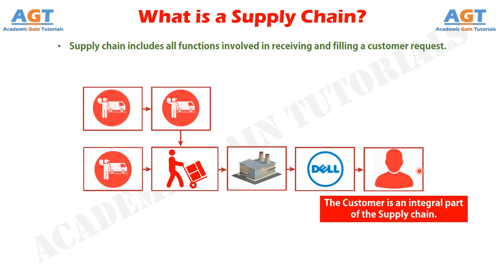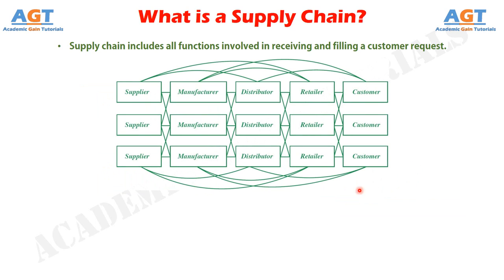The term supply chain conjures up images of product or supply moving from suppliers to manufacturers to distributors to retailers to customers along a chain. This is certainly part of the supply chain, but it is also important to visualize information, funds, and product flows along both directions of this chain. The term supply chain may also imply that only one player is involved at each stage. In reality, a manufacturer may receive material from several suppliers and then supply several distributors. Thus, most supply chains are actually networks. It may be more accurate to use the term supply network or supply web to describe the structure of most supply chains, as shown in this figure.